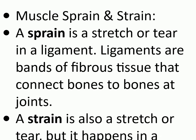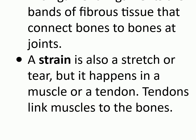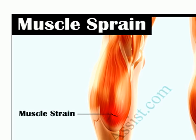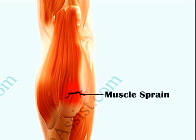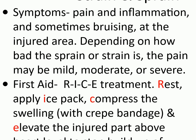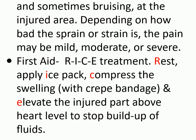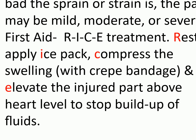First aid for common mishaps — muscle sprain and strain: a sprain is a stretch or tear in a ligament; ligaments are bands of fibrous tissue that connect bones to bones at joints. A strain is also a stretch or tear but it happens in a muscle or a tendon; tendons link muscles to bones. Symptoms: pain and inflammation, and sometimes bruising at the injured area; the pain may be mild, moderate, or severe depending on severity. First aid — RICE treatment: rest, apply ice pack, compress the swelling with crepe bandage, and elevate the injured part above heart level to stop buildup of fluids.